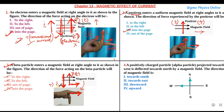Since the positively charged particle is moving downwards, we point our middle finger in the downward direction representing the conventional current. Now the thumb is pointing outwards — that is, out of the page, towards us. So the beta particle, which is a negatively charged particle, will be pushed out of the page.